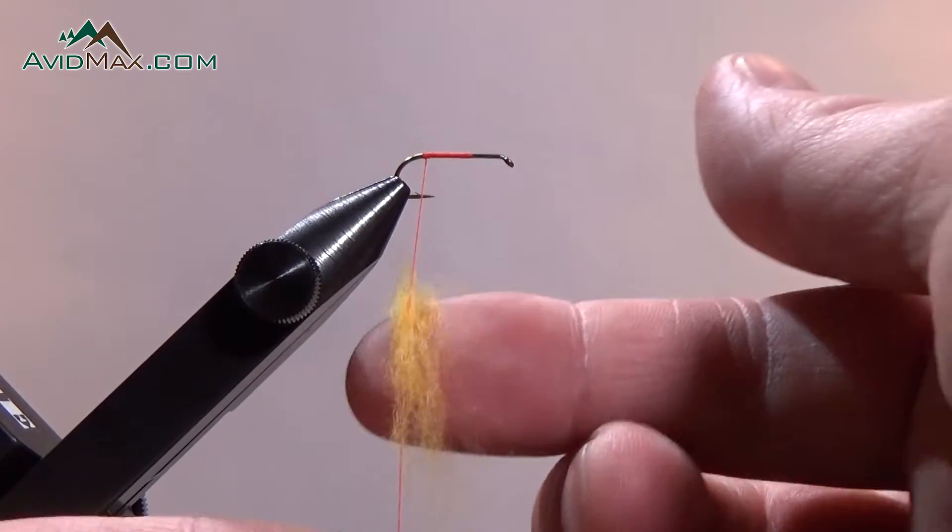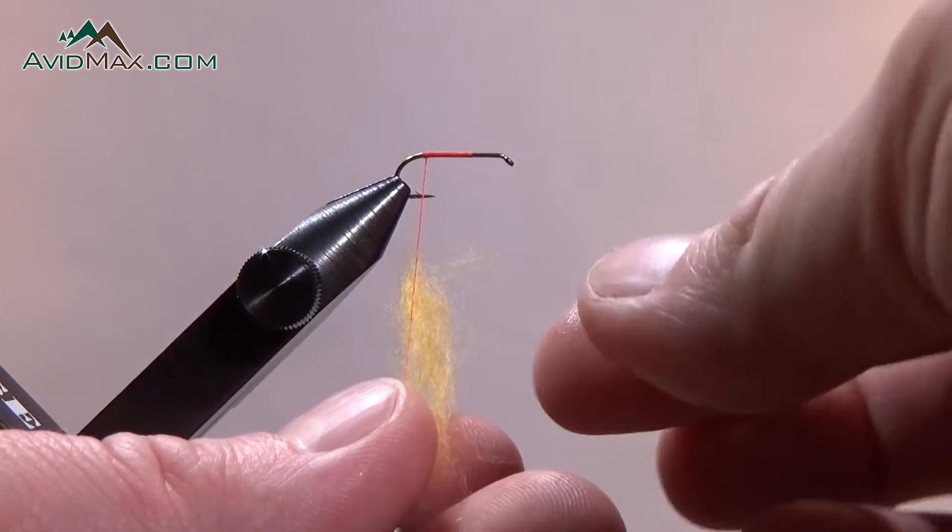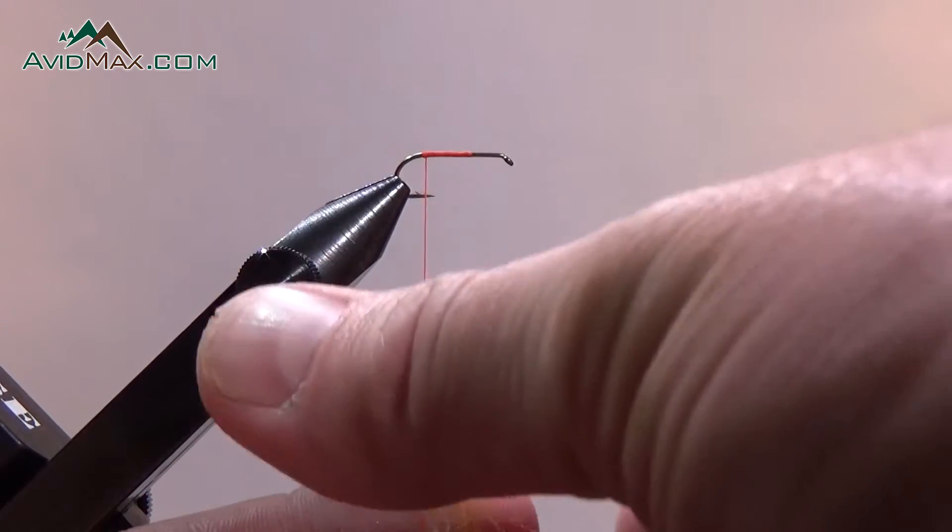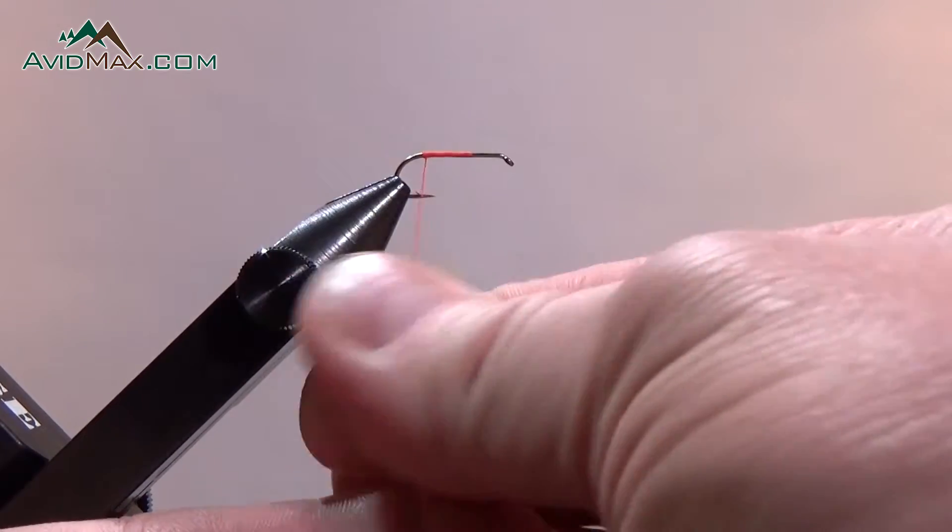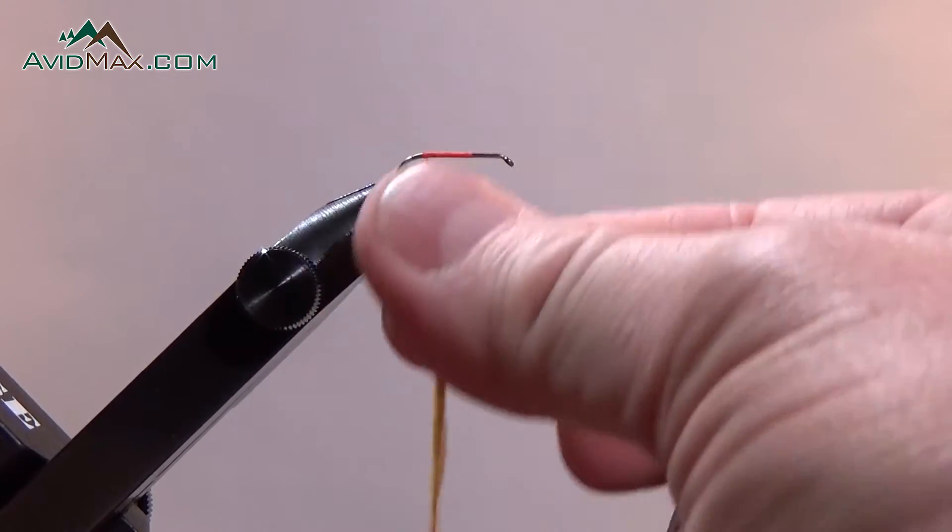We'll start here. Put it on around the thread. I like to moisten my fingers a little bit with my saliva, and we'll just start wrapping that dubbing around our thread.